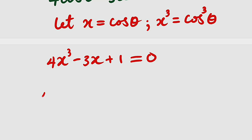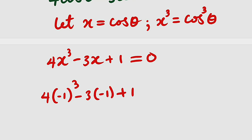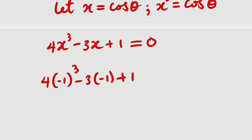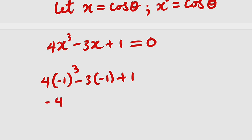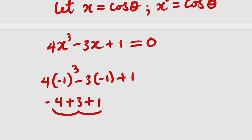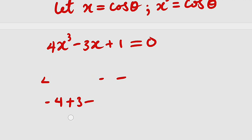What if x equals negative 1? We have 4 times negative 1 cubed minus 3 times negative 1 plus 1. Negative 1 cubed is negative 1, times 4 is negative 4; negative times negative 3 is positive 3, plus 1 gives 0. So x equals negative 1 is a root.